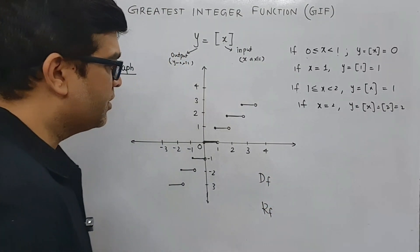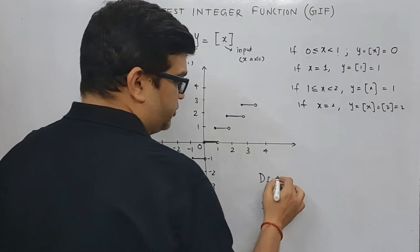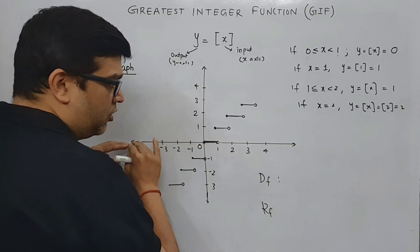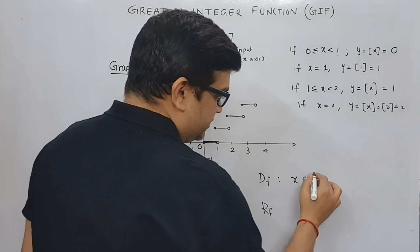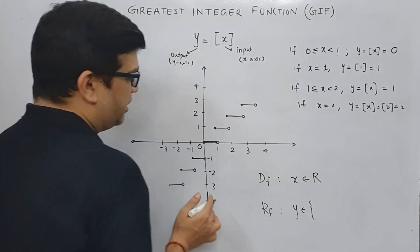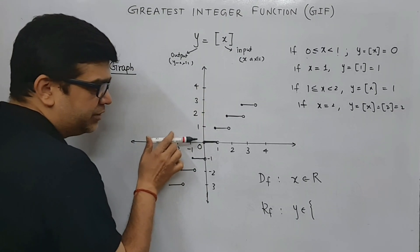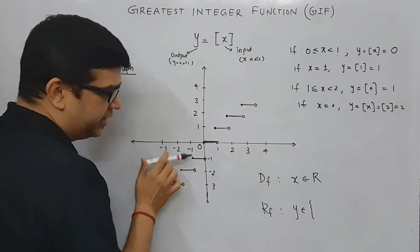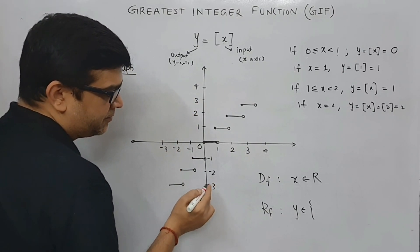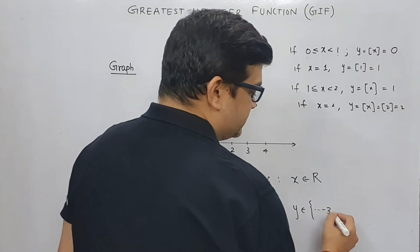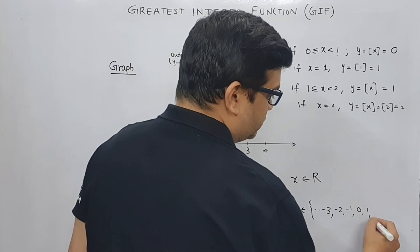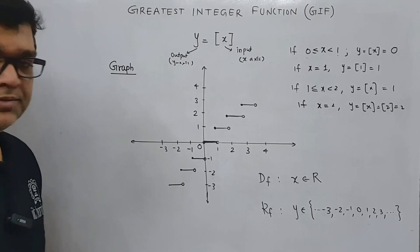Looking at the graph, we can identify the domain and range. The domain means all possible values of x — from the graph you can see that all real numbers are allowed, so the domain is the entire set of real numbers. The range — the values of y — is zero, one, two, three on the positive side, and minus one, minus two, minus three and so on to minus infinity on the negative side, so the range is all integers.